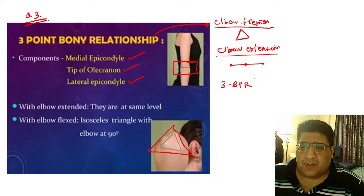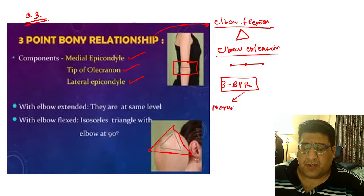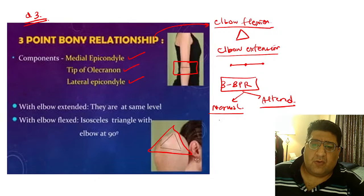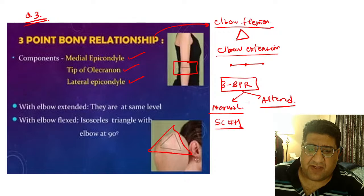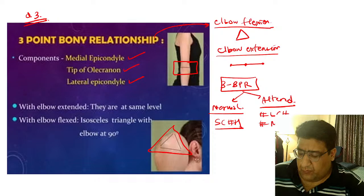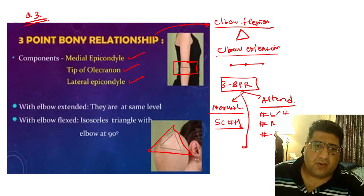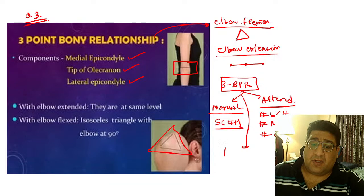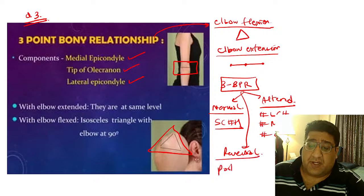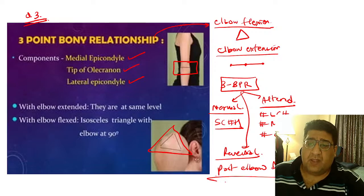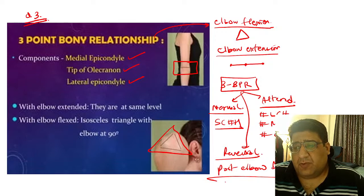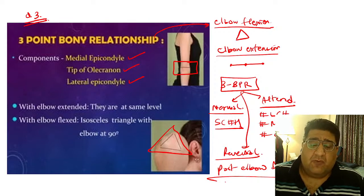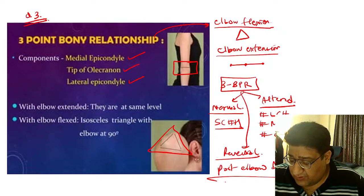In which condition will the three bony point relationship be maintained? It will be normal in supracondylar fracture of the humerus — because that is the only fracture above the level of the bony points. If you fracture the lateral or medial epicondyle, the relationship will be altered. In which condition will you find reversal of the three bony point relationship? That is posterior elbow dislocation. Some students reported the question asked where the relationship is maintained — answer: supracondylar fracture. Others said it asked about reversal — answer: posterior elbow dislocation.